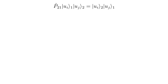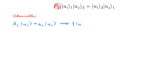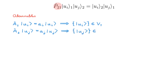After discussing permutations and totally symmetric and antisymmetric states, we need to consider what happens to observables. Let's start with a two-particle system, where the permutation operator P21 exchanges the two particles. Consider a Hermitian operator A1 acting on single-particle state space V1, with eigenvalue equation A1 acting on eigenstate Ui equals eigenvalue Ai times Ui. There is also an operator A2 acting on V2 with the corresponding eigenvalue equation, and we promote both A1 and A2 to act on the full tensor product state space V.